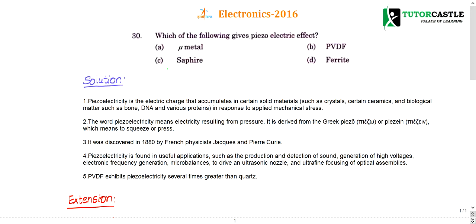Question number 30: which of the following gives piezoelectric effect? Options are mu metal, PVDF, sapphire, and ferrite. This is purely a concept-based question - whoever remembers they'll get a point. These types of questions are unexpected, like unexpected guests who can come at any point of time.